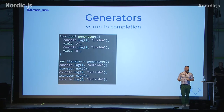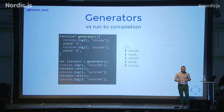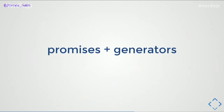The first console.log is the outside one. Then we call iterator.next(), which wakes the generator. It does console.log one inside, yields a value, which is returned from iterator.next(). Control flow returns to the outer scope. We do console.log two outside, call iterator.next() again, the generator wakes up, does its code until the next yield, gives control back, and we do console.log three outside. The generator is just sleeping on the last yield. If we combine generators — which are synchronous — with promises, we get the pattern called a coroutine.